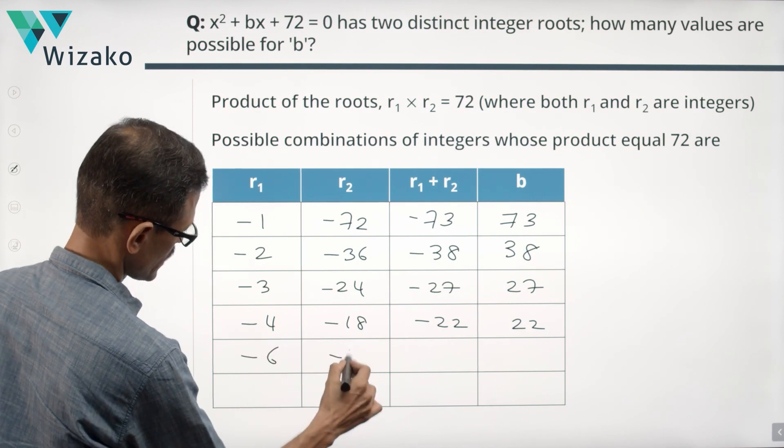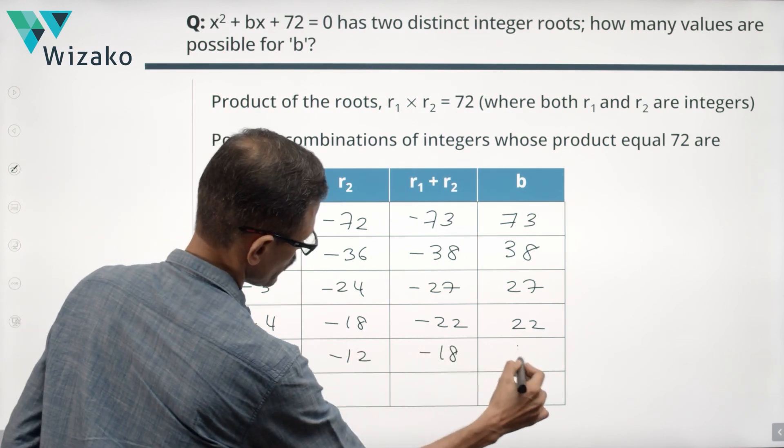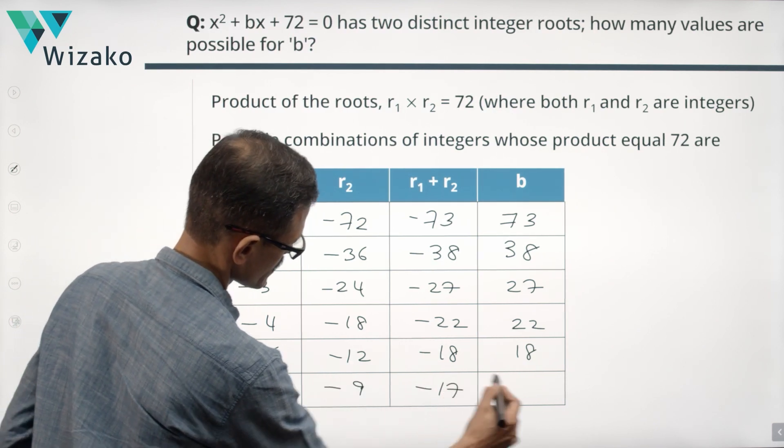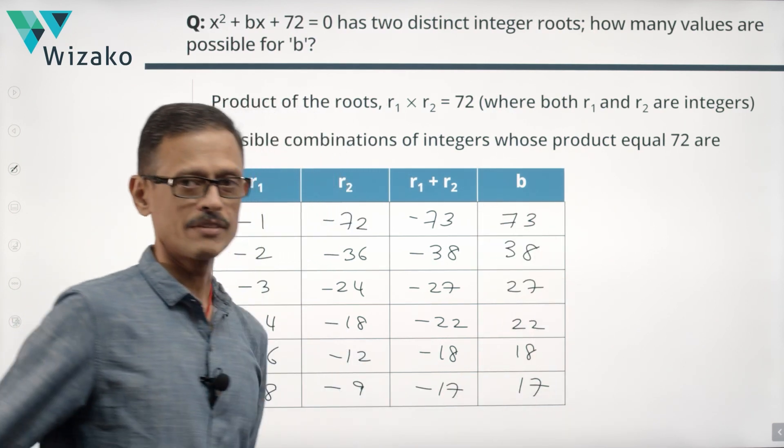Minus 6, minus 12, which is minus 18. Value of B is plus 18. And lastly, minus 8, minus 9 makes it as minus 17 as a sum and the value of B being 17.